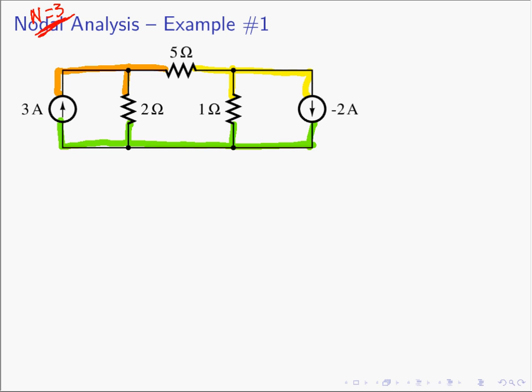Step two: define a reference node. You can pick any one of the three nodes to be the reference, but it turns out the equations become a little easier if you pick the node with the most elements connected to it. The green node has four different elements connected to it; the other two nodes have three. So I'm going to pick the green node to be my reference node, which makes the equations slightly simpler.